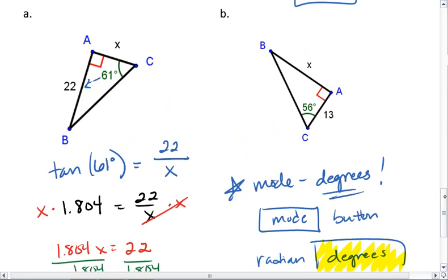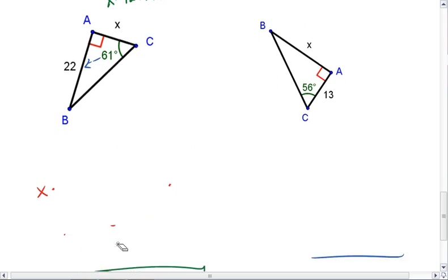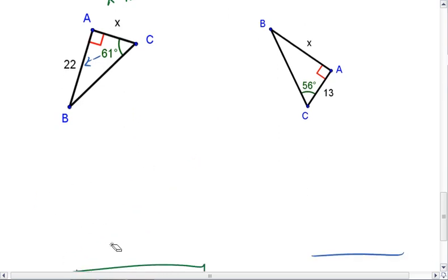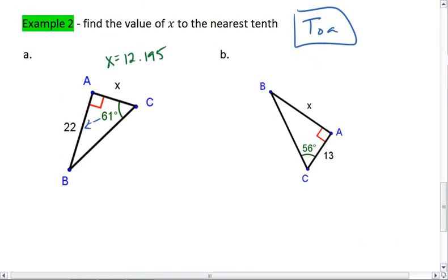Let's look at the second example now. We'll make a little bit of room down here. So here we found x is 12.195. Okay, with our second example, again, we're given angle C.